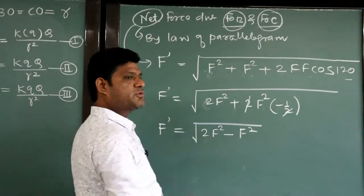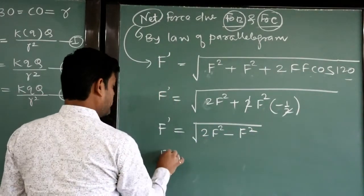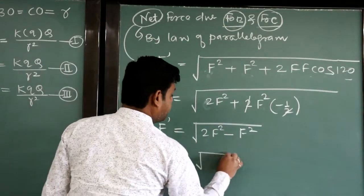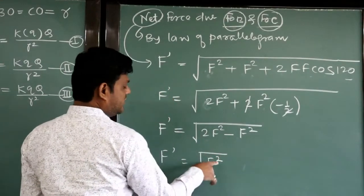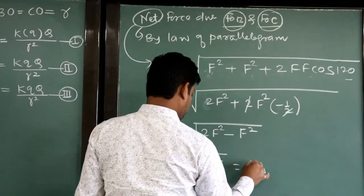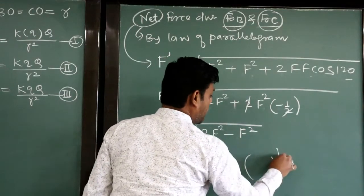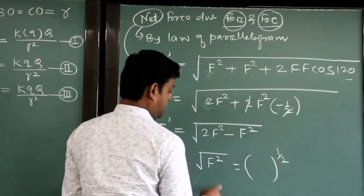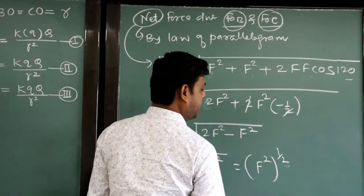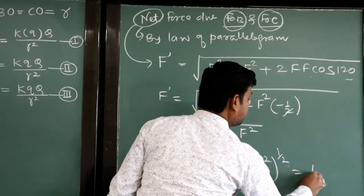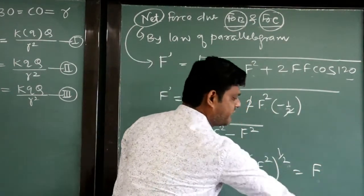We get 2F² minus 1F² equals F², so the square root gives F' = F.